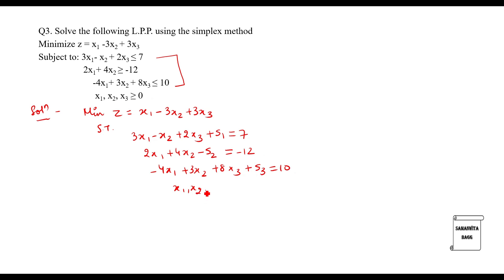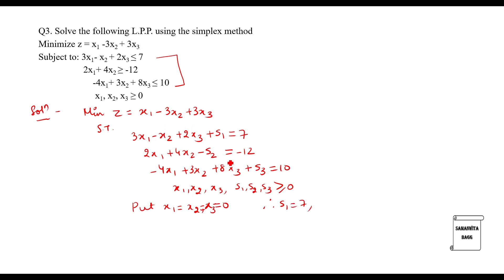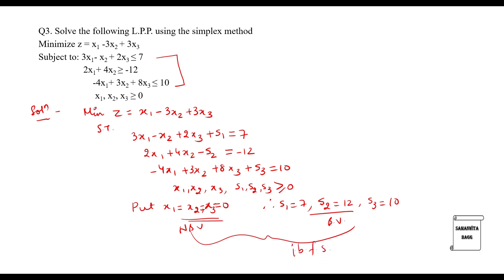Non-negativity constraint: x1, x2, x3, s1, s2, s3 all are greater than or equal to 0. Substituting x1, x2, x3 all as 0, we get s1 equals 7. From the second one, s2 equals 12 because both have minus sign. And s3 equals 10. So x1, x2, x3 are the non-basic variables and s1, s2, s3 are the basic variables. This is called the initial basic feasible solution.